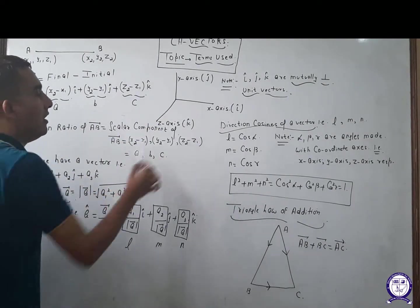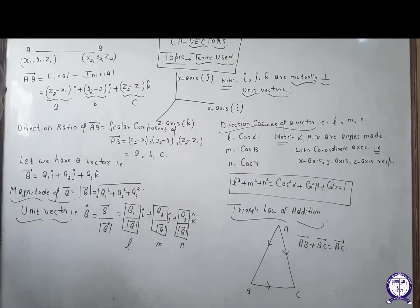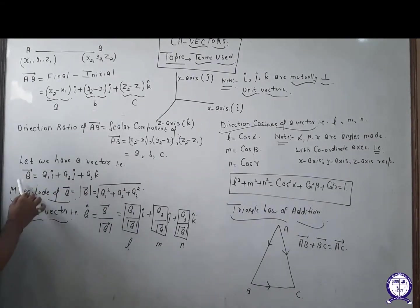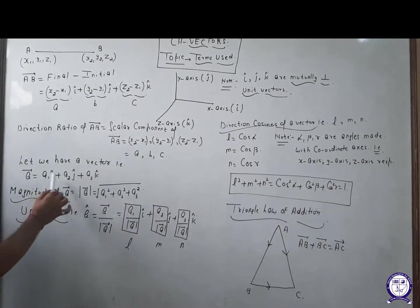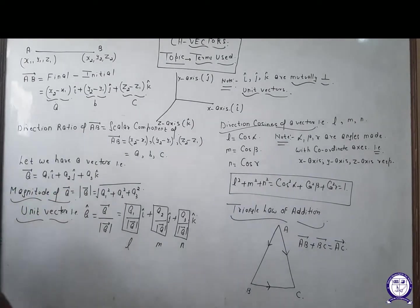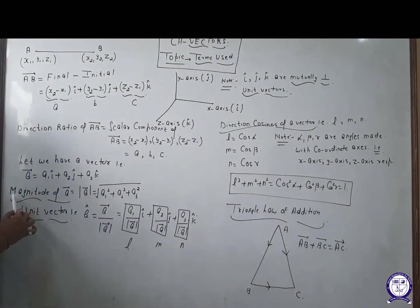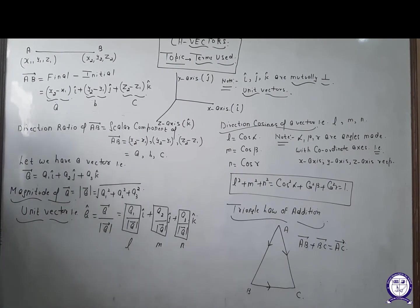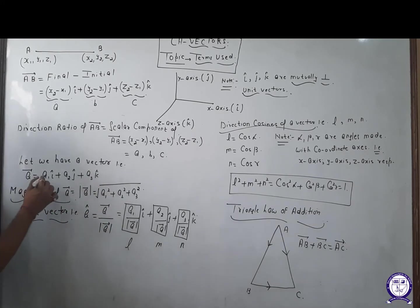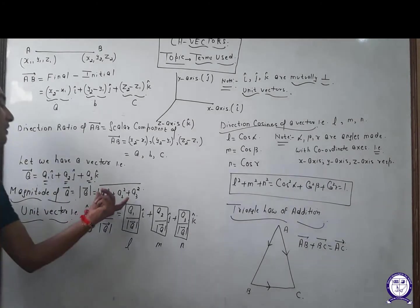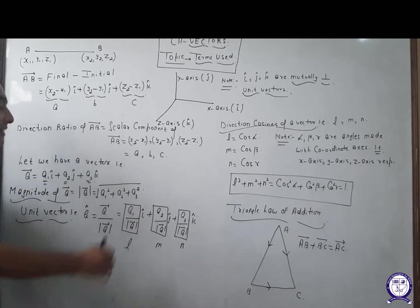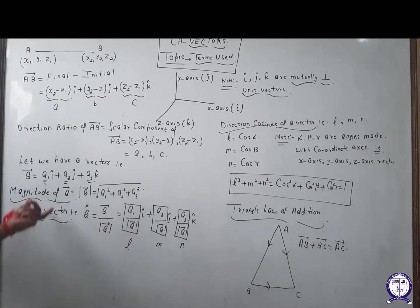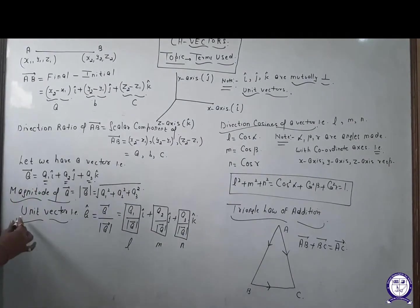Now, if we have a vector — let us suppose vector A is equal to a1 i-cap plus a2 j-cap plus a3 k-cap — you can get the magnitude of a vector, represented by the modulus symbol. It is the sum of squares of the scalar components, and the whole square root is called the magnitude of a vector.